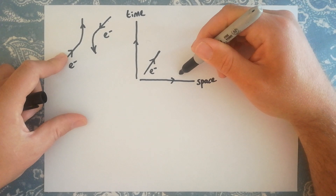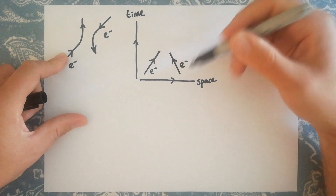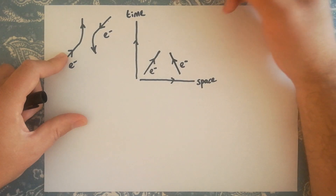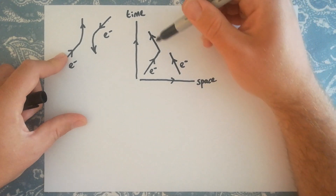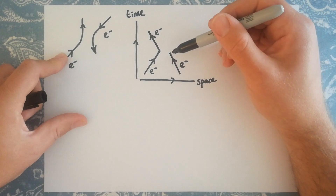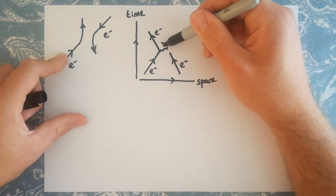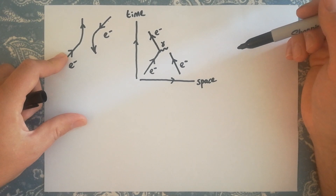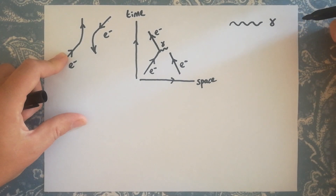For electron scattering we must also have another electron, so we draw that in as well, with the lines slanting towards each other just showing that they're getting closer to one another in space. We can represent the emission of the virtual photon by drawing a change in direction of the electron line, which represents the fact that its velocity has changed. The reason its velocity changes is that it has emitted a virtual photon. We draw different exchange particles using different types of line in Feynman diagrams.